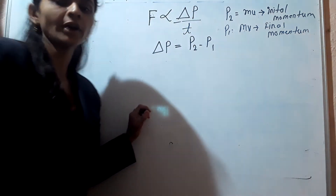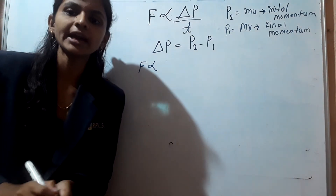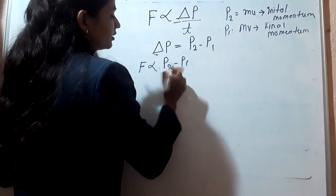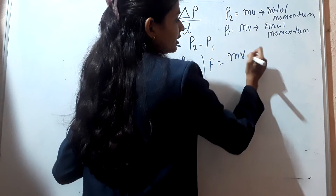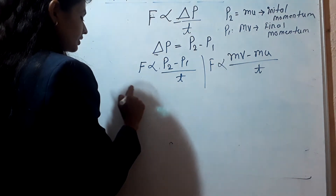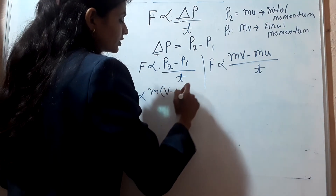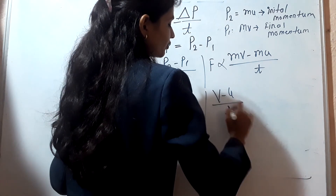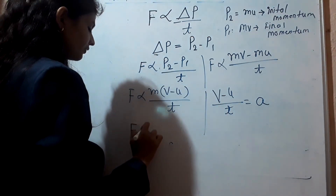So F is directly proportional to delta P upon t. Delta P is P2 minus P1 upon t. So F is proportional to mv minus mu upon t. Taking m as common, we get m times (v minus u) upon t. We already know that v minus u upon t is equal to acceleration a.